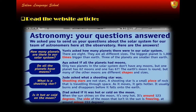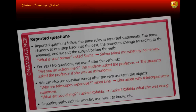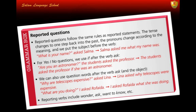It usually burns and disappears before it falls onto the Earth. The fourth question: is it hot or cold on the moon? Zead asked if it was hot or cold on the moon. When the sun shines on the moon it's very hot — around 123 degrees. The side of the moon that isn't in the sun is freezing at around minus 153 degrees.